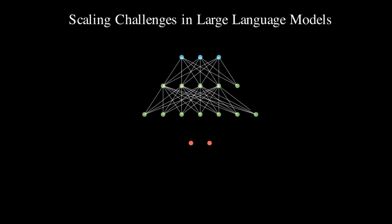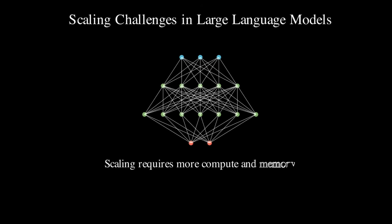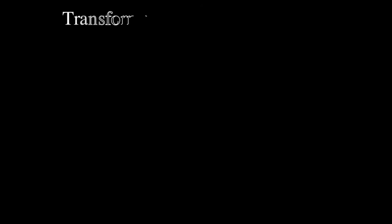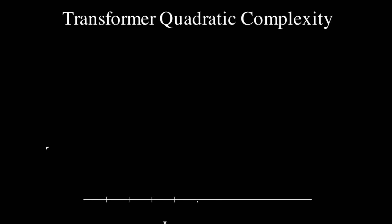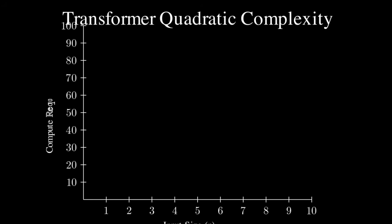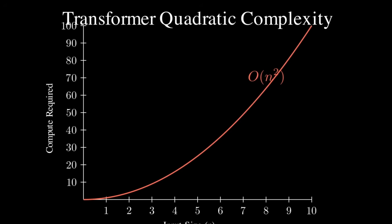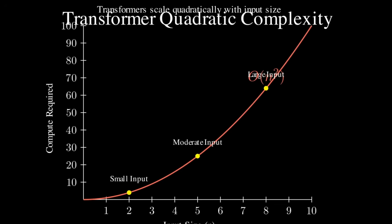What does quadratic complexity mean? It means as you increase the length of the input text or sequence you give to Transformers, the computation required grows exponentially. For a very basic example: if you give three words and it requires six units of compute, when you give four words — increasing by just one — it might jump to around 36. This has been the biggest problem of scaling Transformers up.